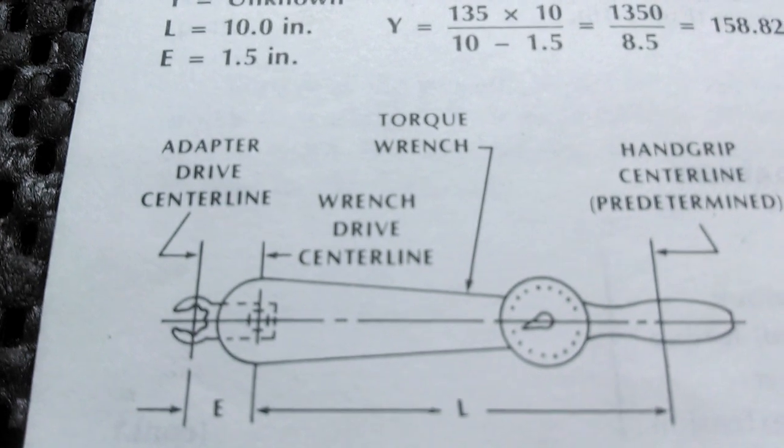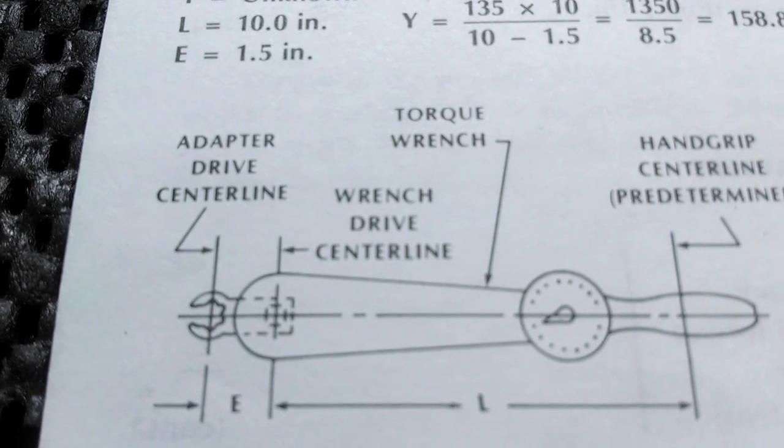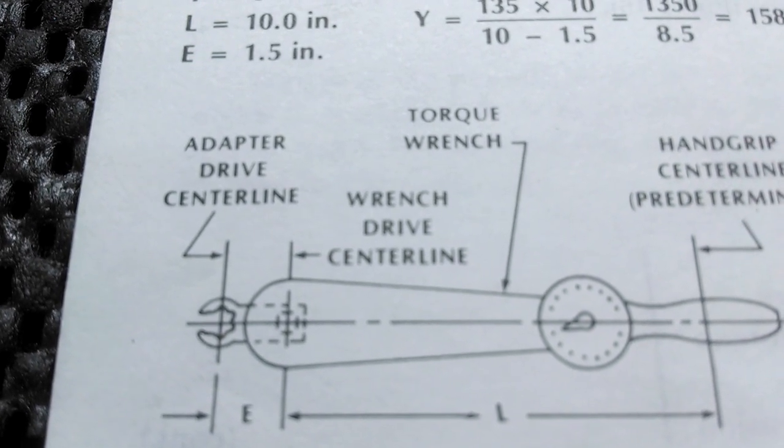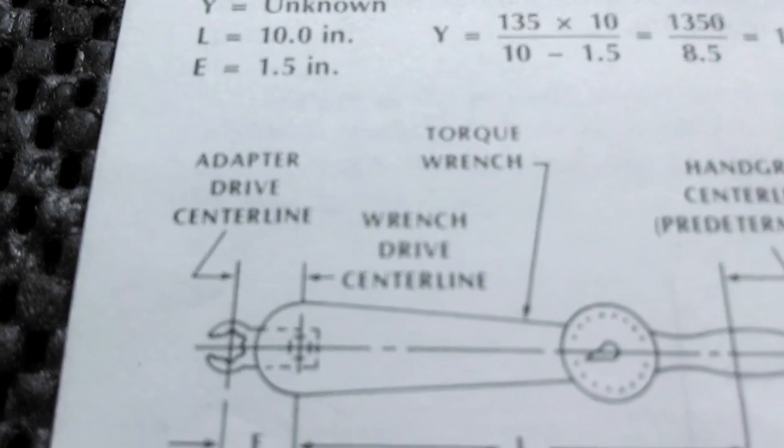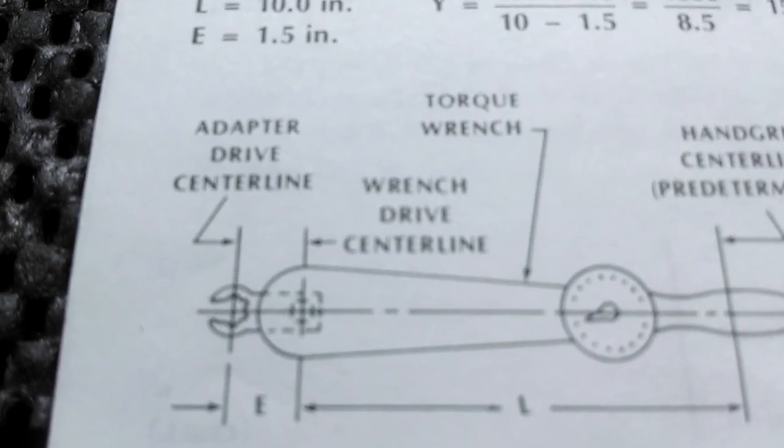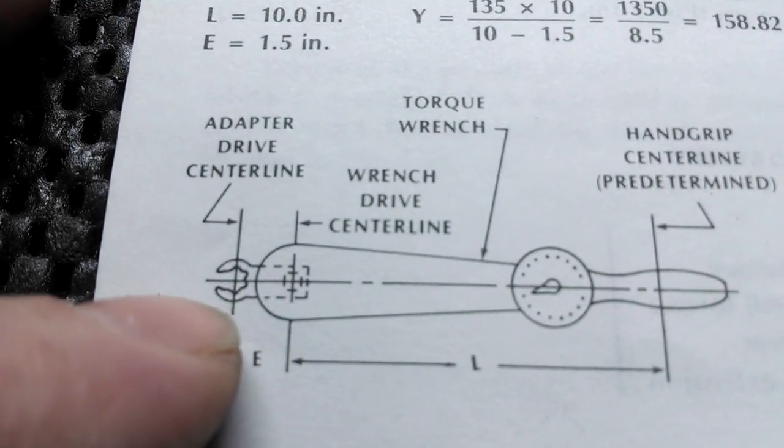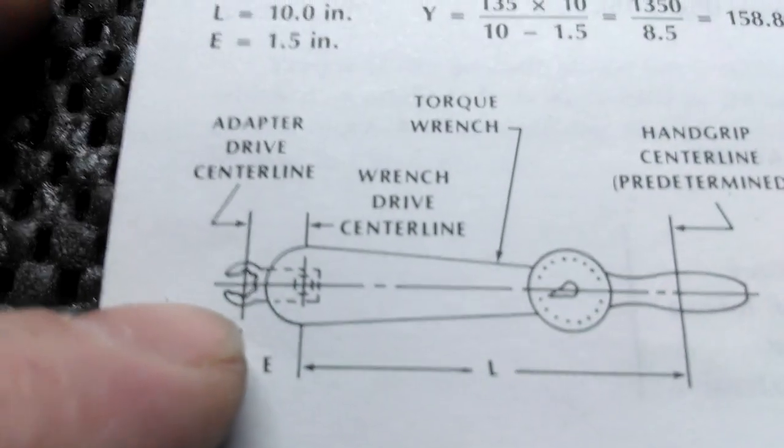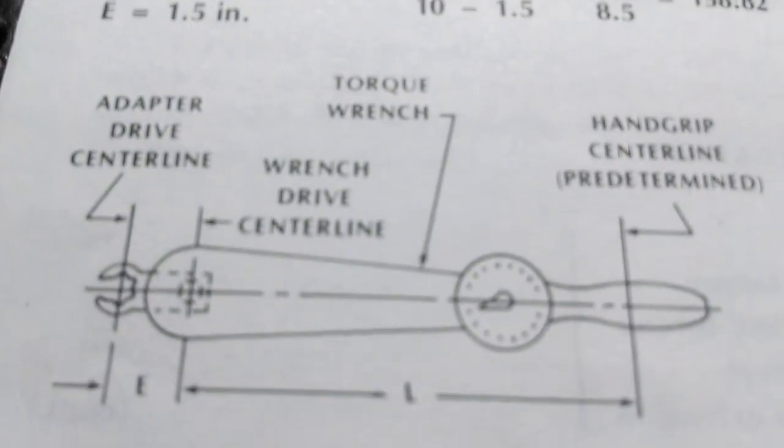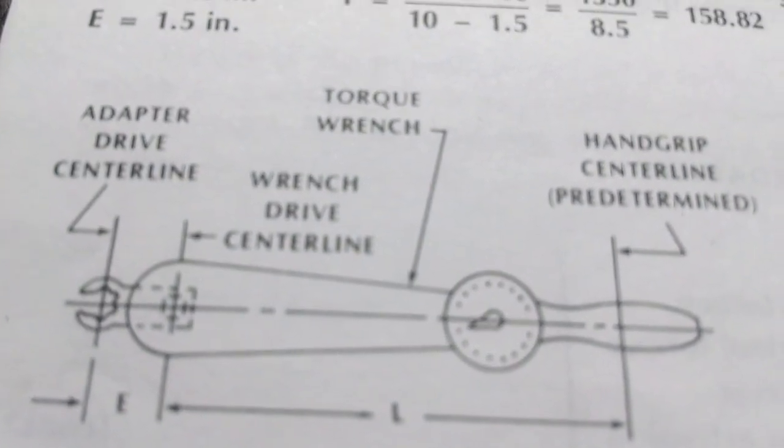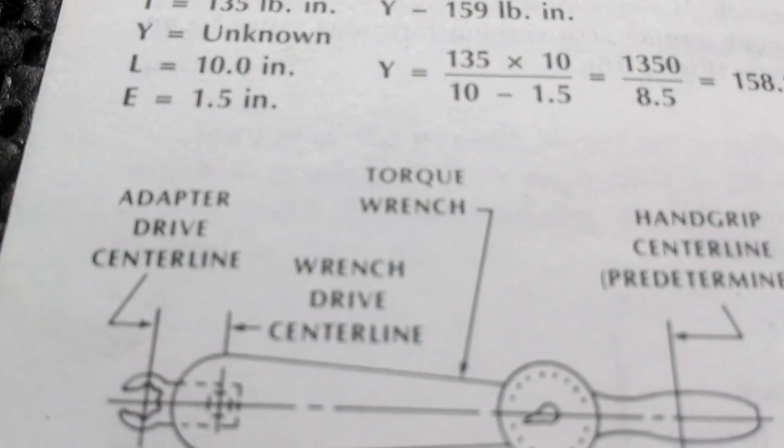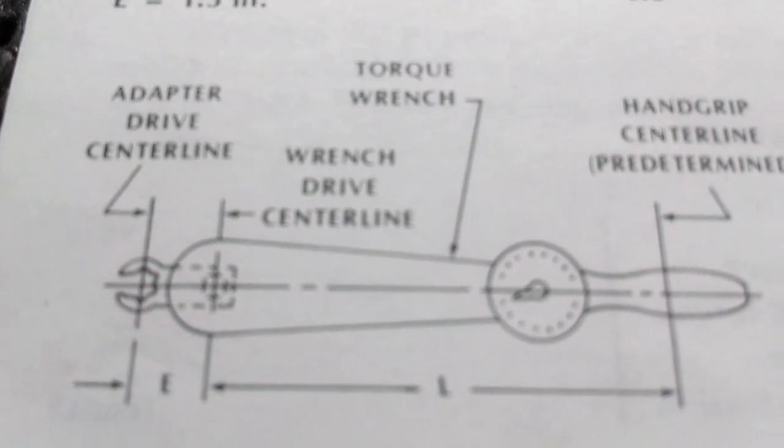But when they say apply 40 foot-pounds to nut, or in the barrel nut case, 30 foot-pounds do not exceed 80, then they want you to apply the actual torque, not what the torque wrench says when you hook it up to 3 feet of adapters, or an inch of adapter. It makes just about as much difference.